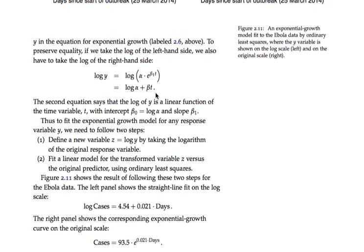And so that tells us that there's a very simple procedure in order to be able to fit the exponential growth curve for any response variable y. Effectively, what we're doing is defining a new response variable. You can call it z if you want, log number of cases, log y, taking the logarithm of the original response variable. And then you fit a linear model for that transformed variable, z equals log y, versus the original predictor, which is time. And we just do that using ordinary least squares.